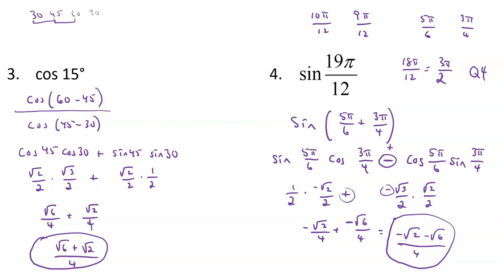When it's cosine, the sign in the middle changes; when it's sine, the sign in the middle doesn't change — sine of A plus B is sine cosine plus cosine sine. I left that error in to show that people make mistakes, but you should check your work at the end. At least verify that the sign of your answer matches the expected quadrant, then work backwards to find where the mistake happened.